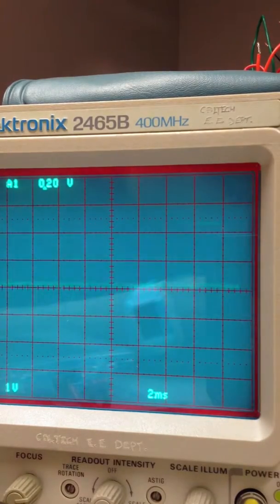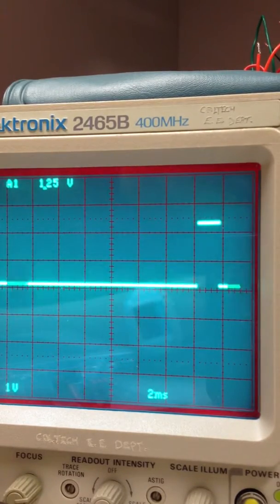I'm going to try to line it up with the lines so we get better. Okay. So this is lined up with the line. Two milliseconds per division.